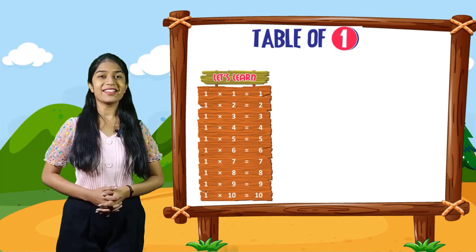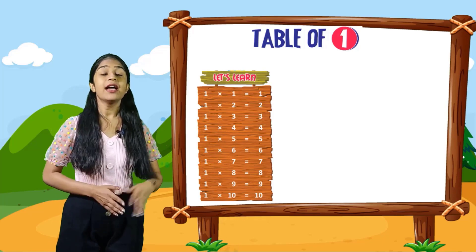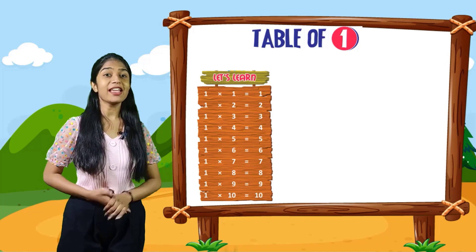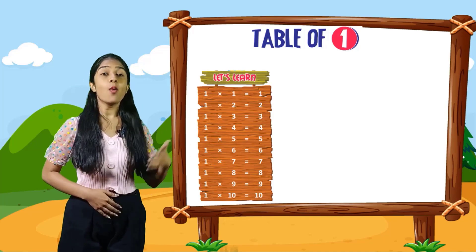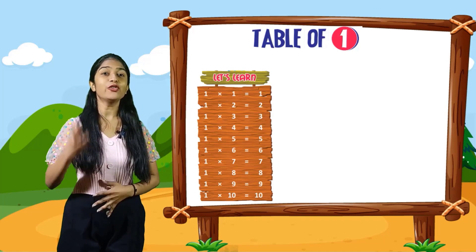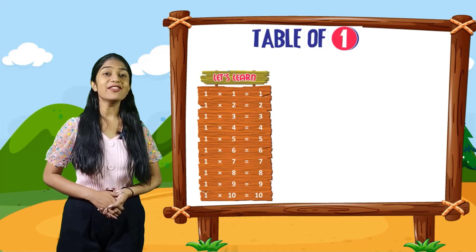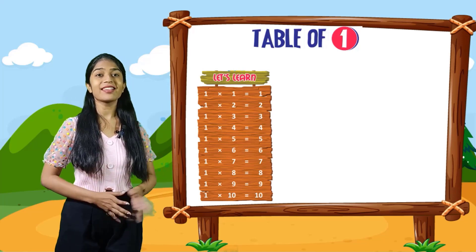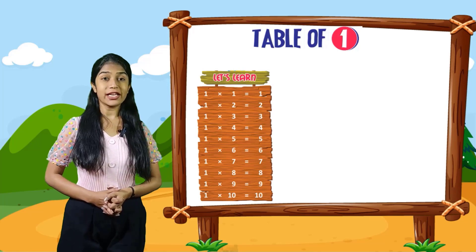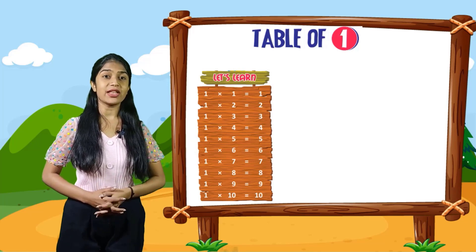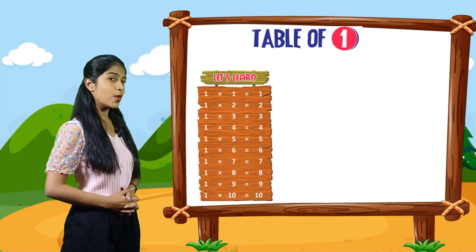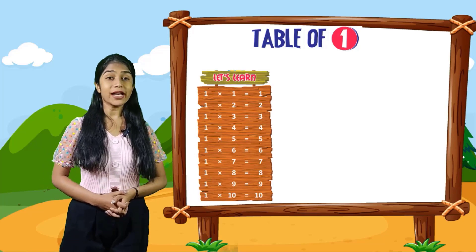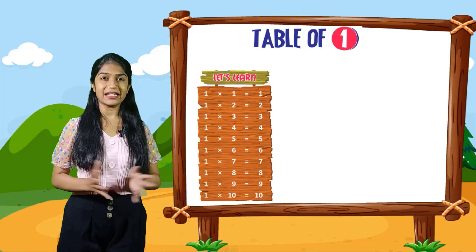1 into 1 is equal to 1. 1 into 2 is equal to 2. 1 into 3 is equal to 3. 1 into 4 is equal to 4. 1 into 5 is equal to 5. 1 into 6 is equal to 6. 1 into 7 is equal to 7. 1 into 8 is equal to 8. 1 into 9 is equal to 9. 1 into 10 is equal to 10.